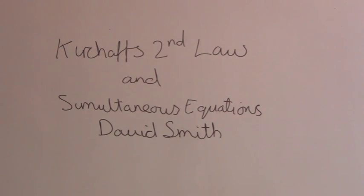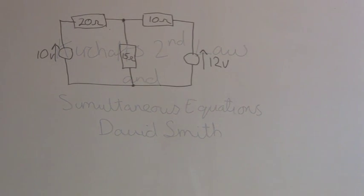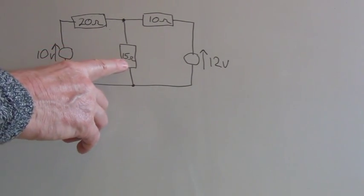Hello, David Smith here. Today's tutorial is going to be on Kirchhoff's second law and simultaneous equations. So let's get started. The problem is: using Kirchhoff's second law, find the power dissipated across the 15 ohm resistor of the following circuit.